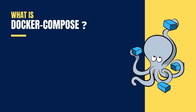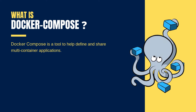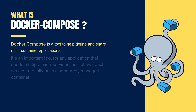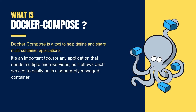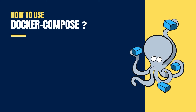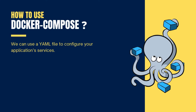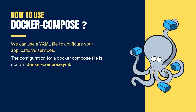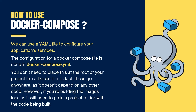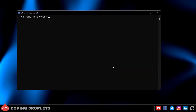Next let's move to Docker Compose. What is Docker Compose? Docker Compose is a tool to help define and share multi-container applications. It's an important tool for any application that needs multiple microservices, as it allows each service to easily be in a separately managed container. We can use a YAML file to configure your application's services. The configuration for a Docker Compose file is done in docker-compose.yml. You don't need to place this file at the root of your project — it can go anywhere as it doesn't depend on any other code. However, if you are building images locally, it will need to go in a project folder with the code being built.